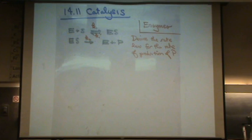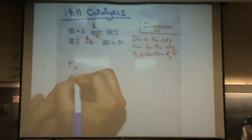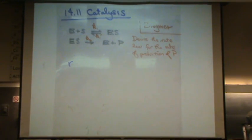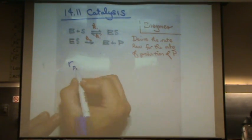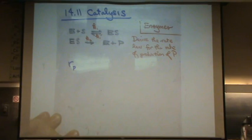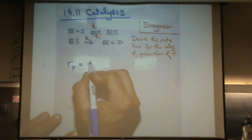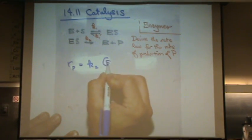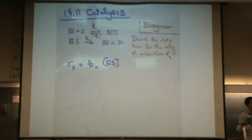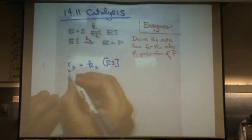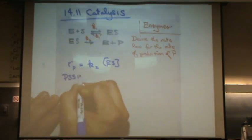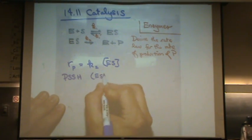So what's the intermediate? ES is our intermediate. So what rate do I want to write this out for? It's the second one that makes the products. In your book I think instead of rate two it just says RP, rate of production of the products. So I'm going to use RP. That's K2 times ES. You'd be done, however, you've got an intermediate in your rate law. Not acceptable. Can't measure that. So we're going to use our PSSH for ES, our intermediate.